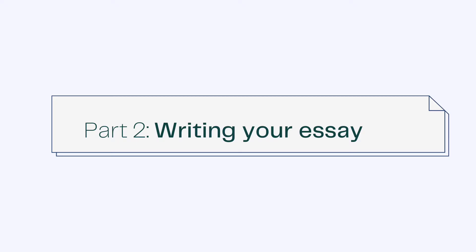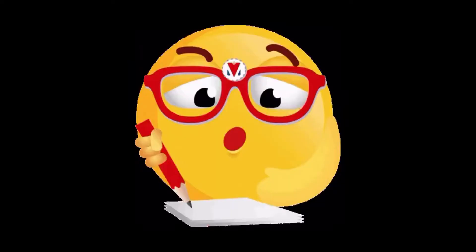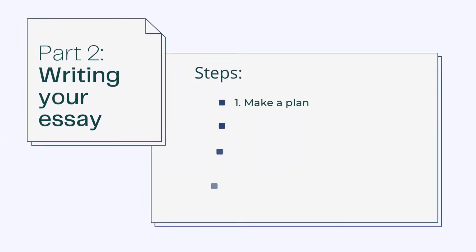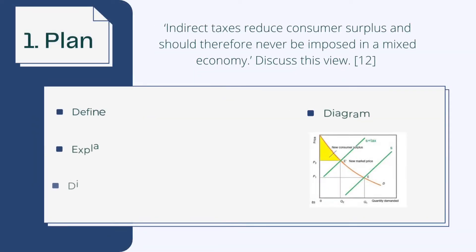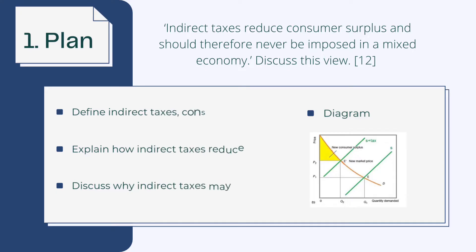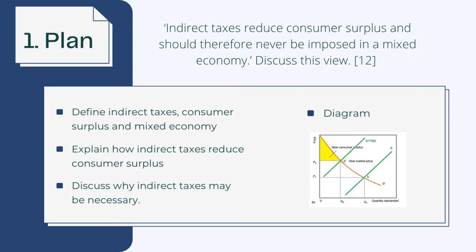Now that you have all the knowledge required to correctly read the essay question, let's move to part 2: Writing the Essay. Step 1: Make a plan. You'll improve your chances of writing a good answer by reading the question carefully and then planning your answer. We suggest that you start by making notes as a rough sketch for your answer — spend around 5 minutes doing this. Then elaborate your notes into your answer, using headings and paragraphs, and picking out the main points from the question.